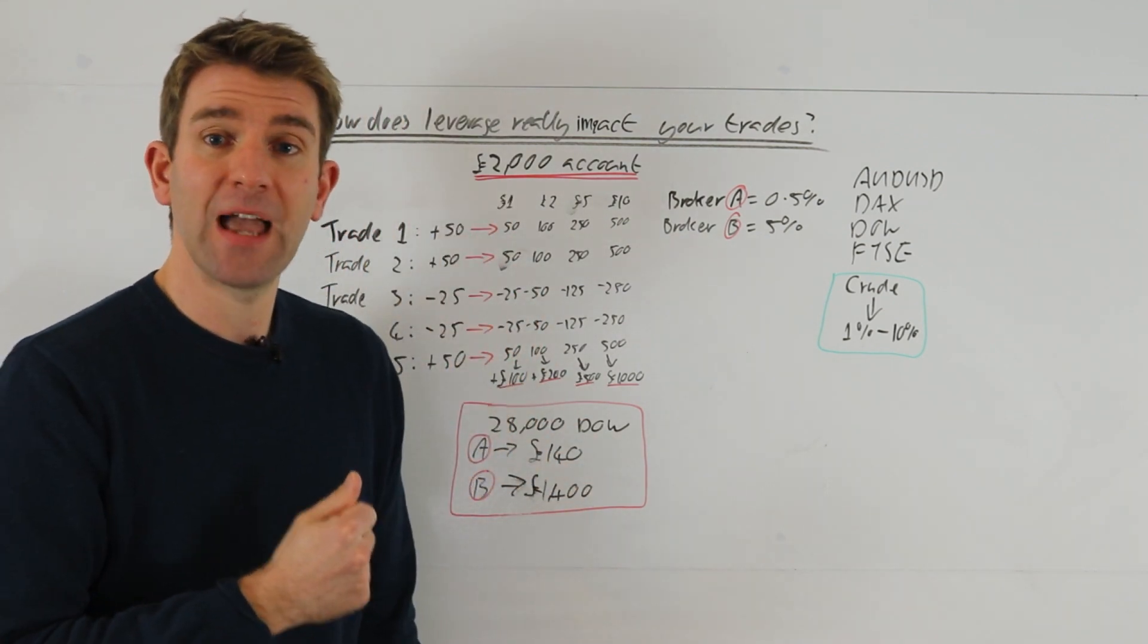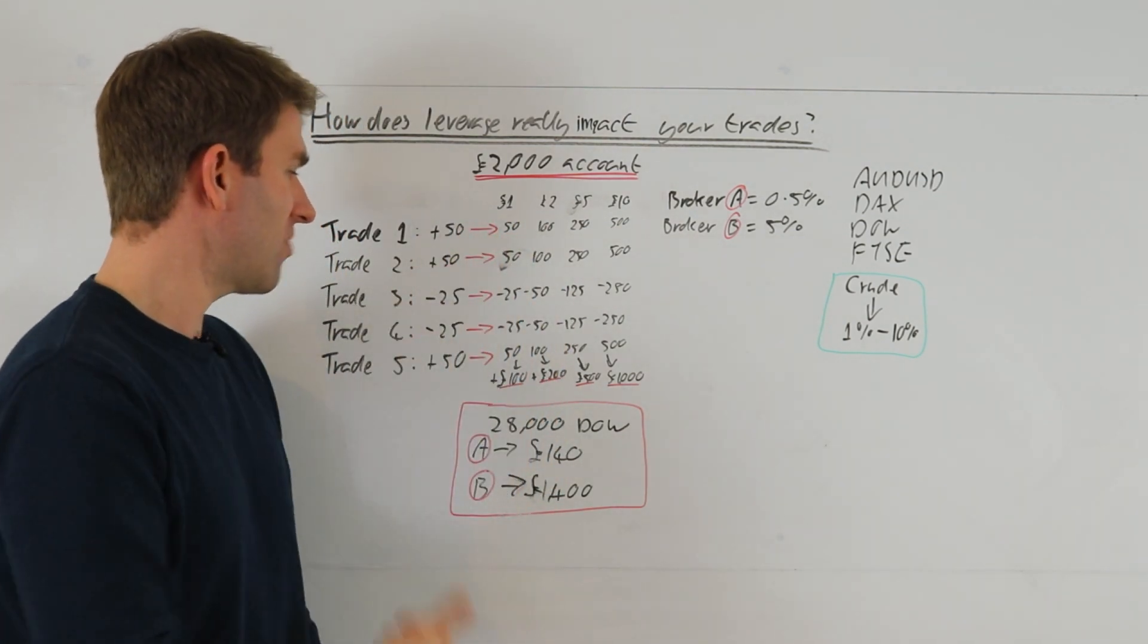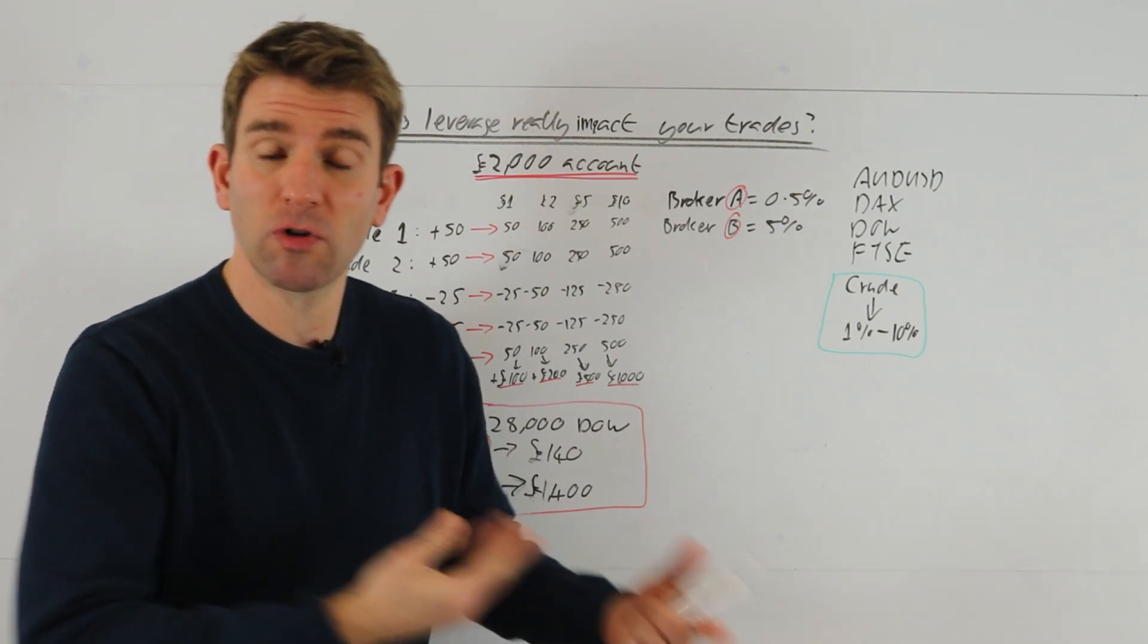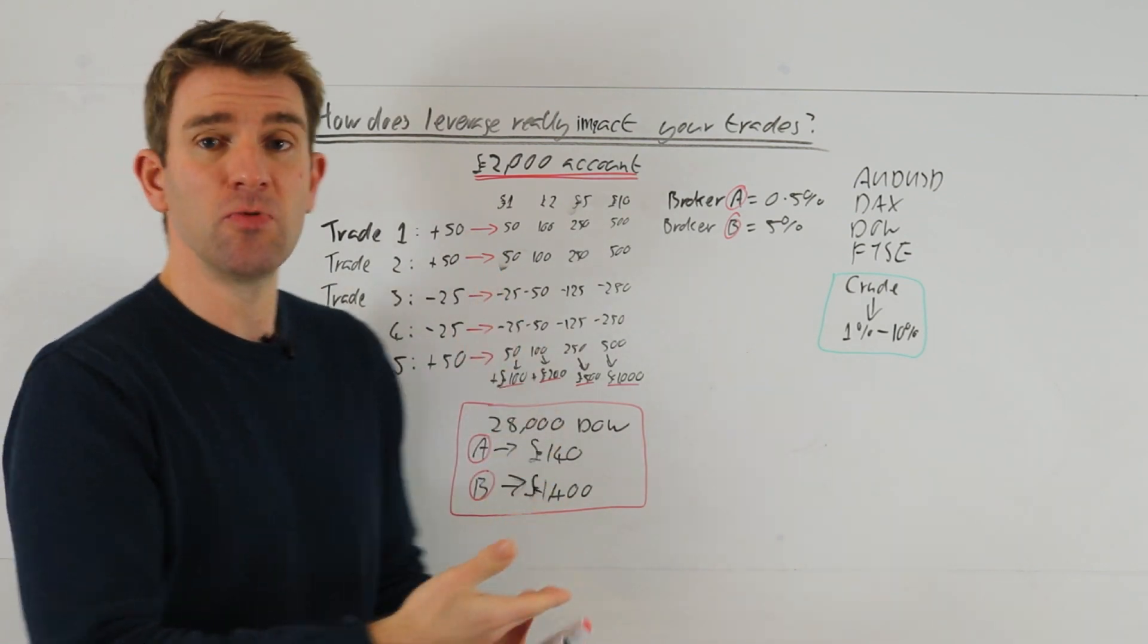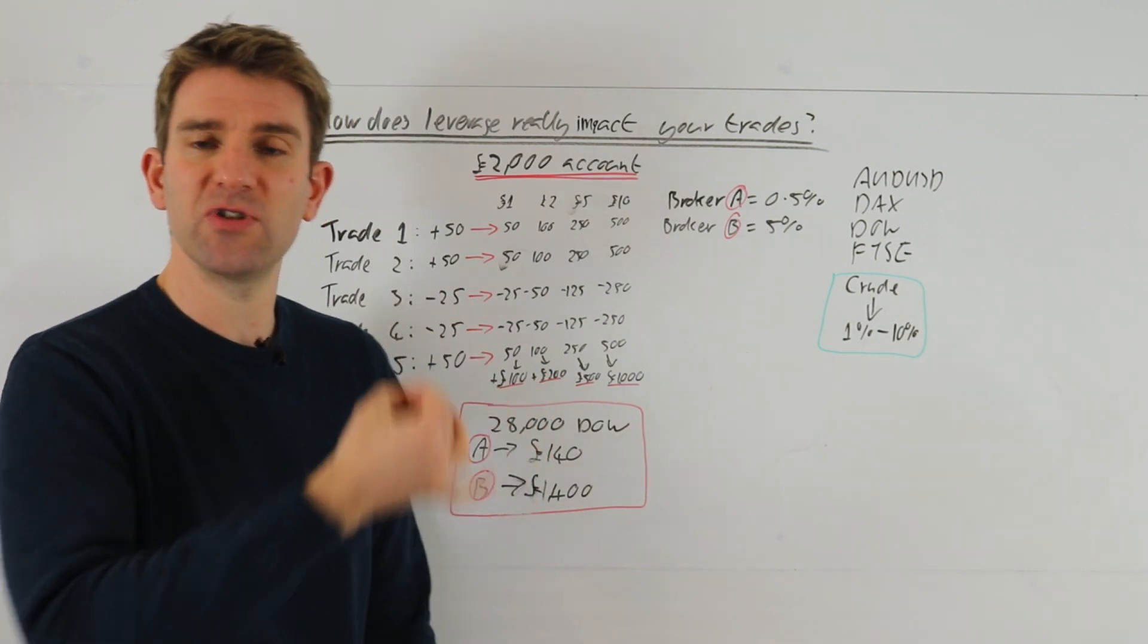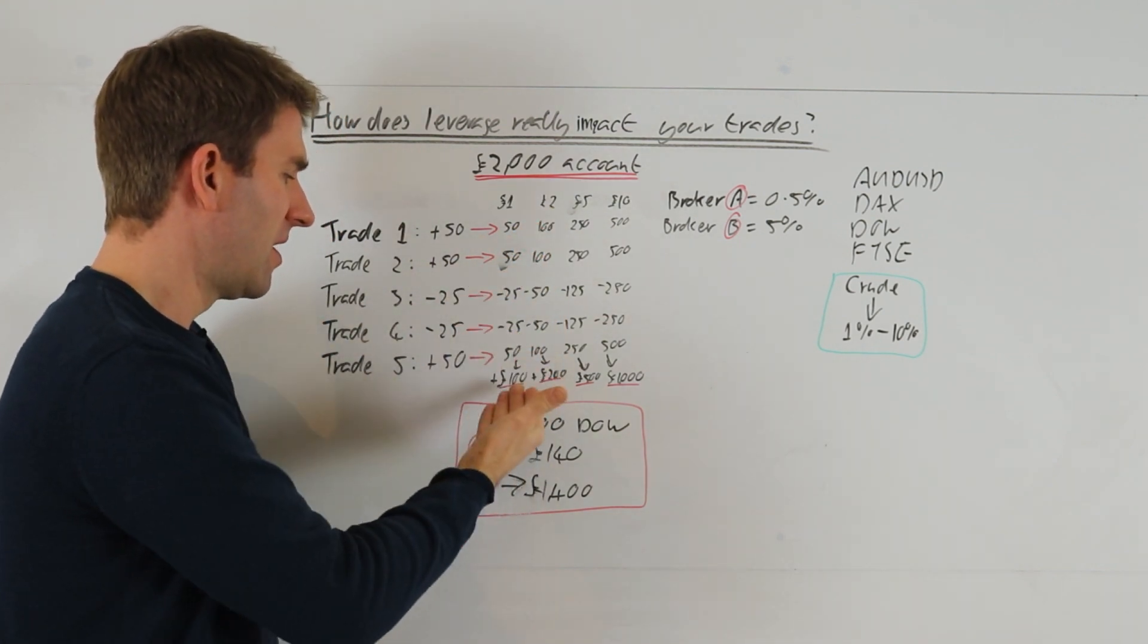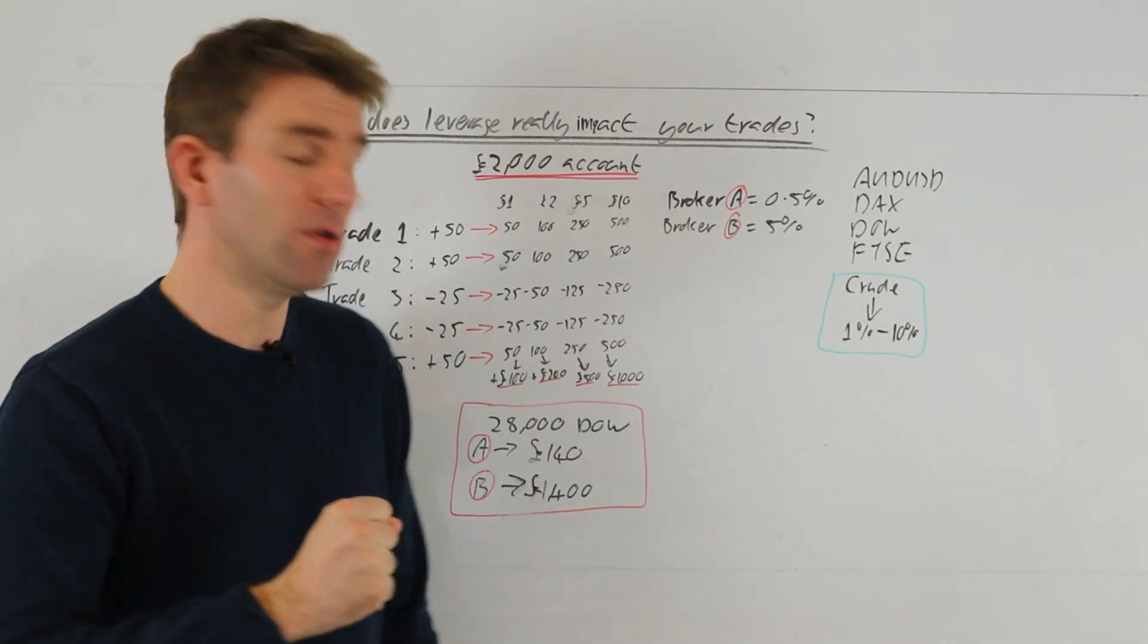Let's imagine now we have five trades here and these five trades we have a winning 50 point trade, a winning 50 point trade, a losing 25 point trade, losing 25 points, winning 50 points. That's not an unreasonable expectation, two to one risk reward ratio on the trades that we're taking, and we've got three winners there, two losers. It might obviously go the other way, but just for illustrations, let's just look if we had a profitable strategy, profitable expectancy. This is what we were doing. So £1 a point, we make 50, 50, lose 25, 25. The net for us there is £100 after these five trades. That's our profit and that's all we can do if we're trading with Broker B at 5%.